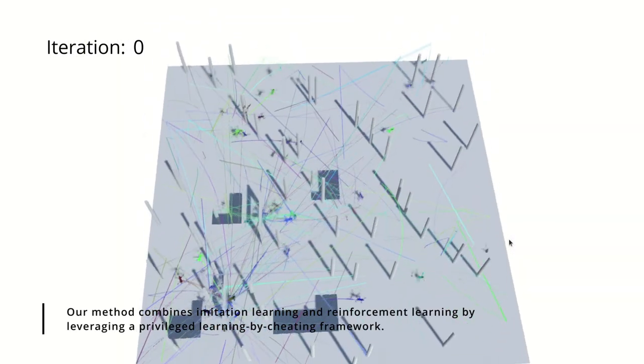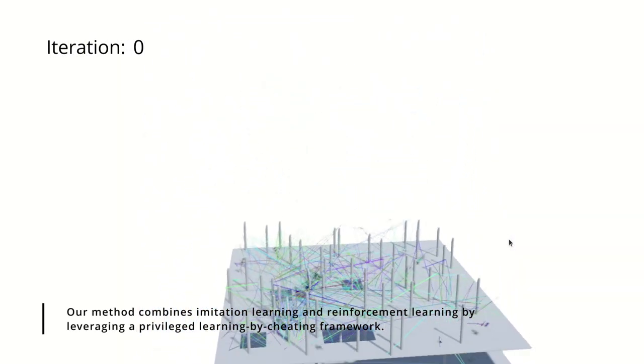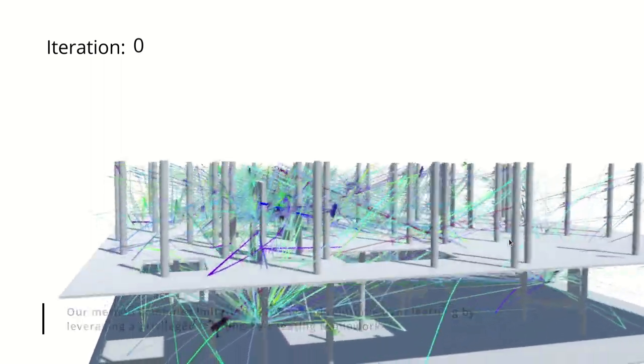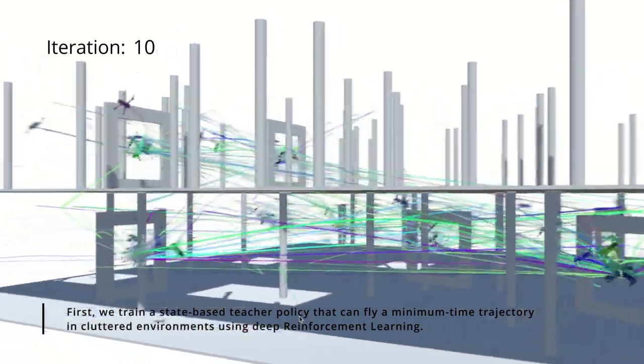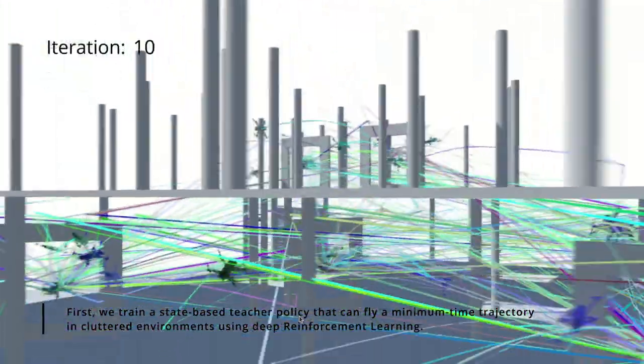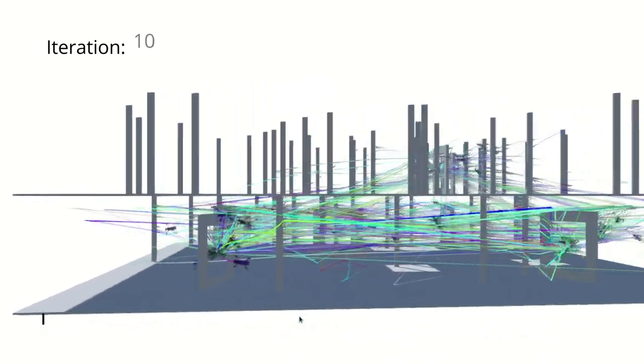Our method combines imitation learning and reinforcement learning by leveraging a privileged learning-by-cheating framework. First, we train a state-based teacher policy that can fly a minimum-time trajectory in cluttered environments using deep reinforcement learning.